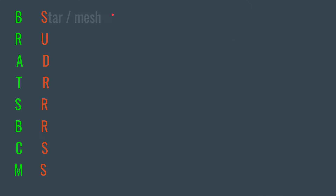For the exam, we have the mitigation of using a star and a mesh topology. For this one, we're going to use the U to represent a dual ring — think of the U in 'dual.' You're going to use a dual ring.